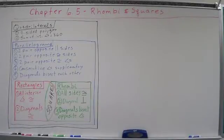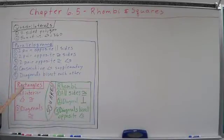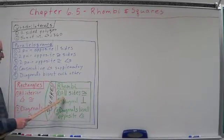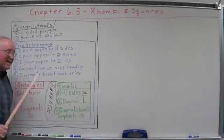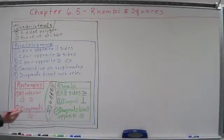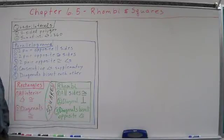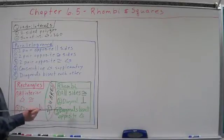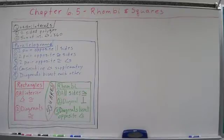In introducing the rhombi, they have their own set of characteristics, three of them. One, all sides are congruent. Notice that rectangles, all angles are congruent. Rhombi, all sides are congruent. Over here, the diagonals are perpendicular to each other. Parallelogram, diagonals bisect each other. Rhombi, they're perpendicular to each other.